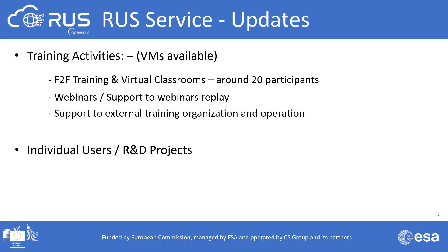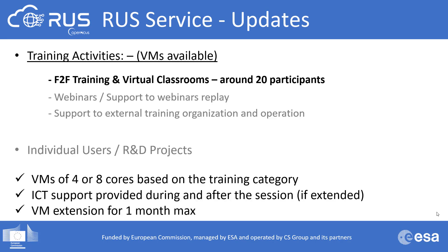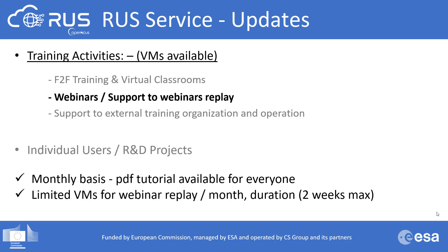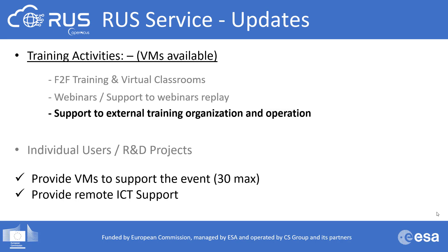The ROOS offer is organized around two main activities: support to individual users and their R&D projects, and training activities including face-to-face events, webinars, and support to external trainings. Regarding face-to-face events, a small audience is maintained to ensure high interaction. VMs will have four to eight cores depending on processing needs and will last one month maximum. Regarding webinars, the rate of one webinar per month is maintained, with step-by-step guides published as before. There will be a limited amount of VMs for webinar repeat, with a duration of two weeks maximum.